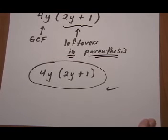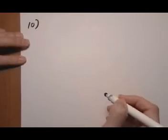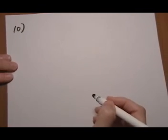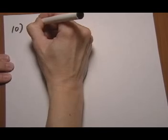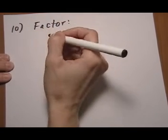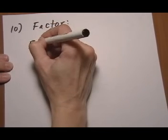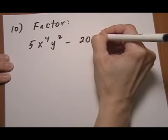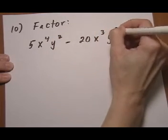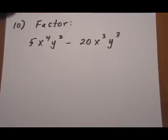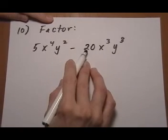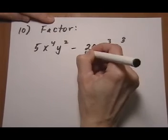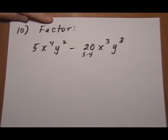Okay, so that's one example of factoring. Let's do one more — number 10. Number 10 again, we want to factor. This one has a bit more going on. We have 5x to the 4th y squared, take away 20x cubed y cubed. Right away I'm looking at the 20 and thinking it has a 5 — I can call it 5 times 4. So let's think of the 20 as 5 times 4.